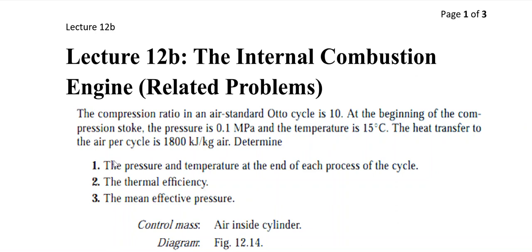Lecture 12b: The Internal Combustion Engine — related problems. The compression ratio of the air standard Otto cycle is 10. At the beginning of the compression stroke, the pressure is 0.1 MPa and the temperature is 15°C. The heat transfer to the air per cycle is 1800 kJ/kg. Determine the pressure and temperature at the end of each process of the cycle, the efficiency, and the mean effective pressure.